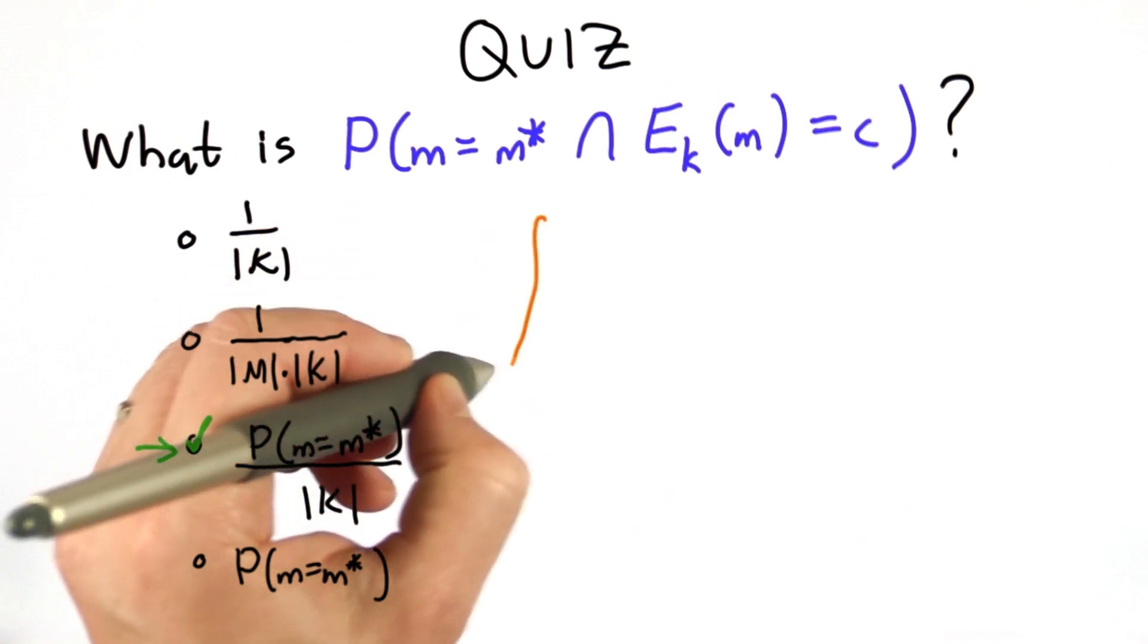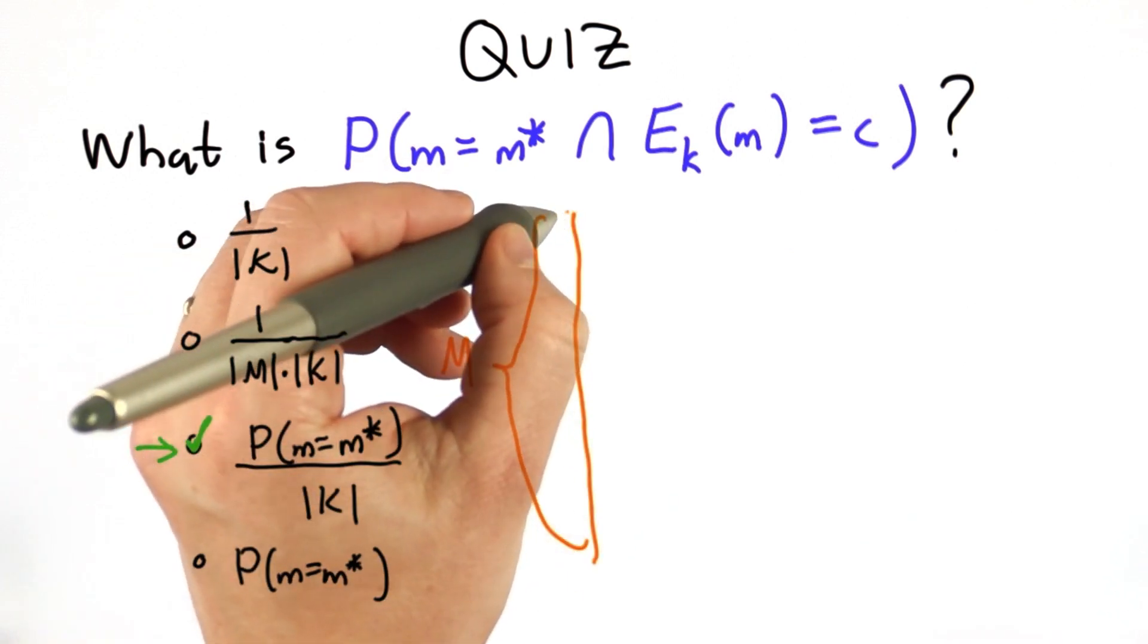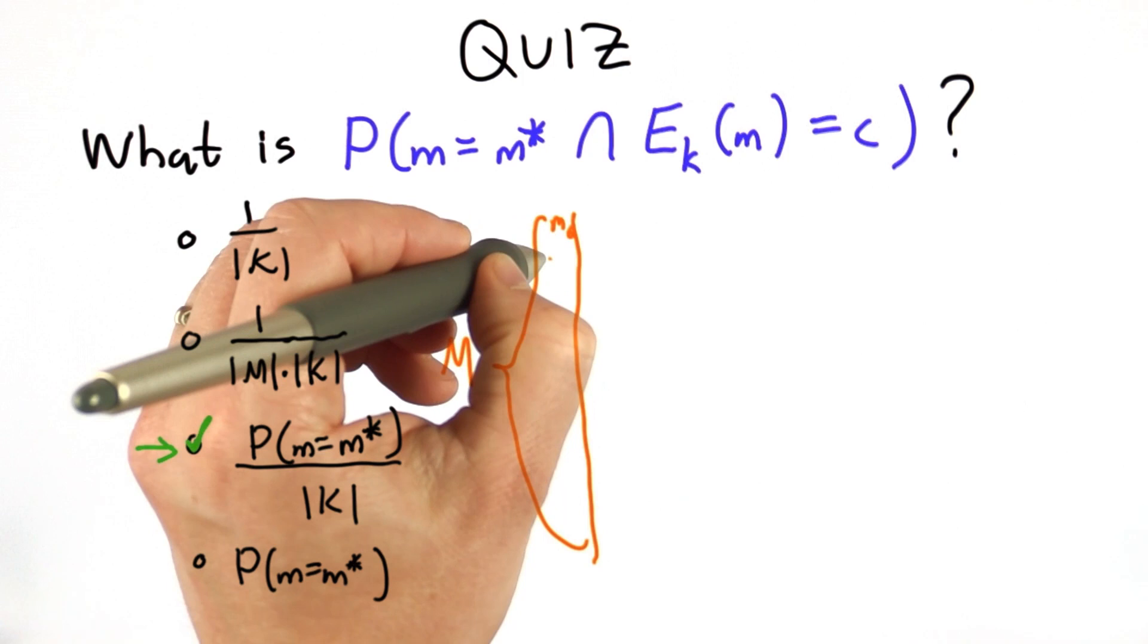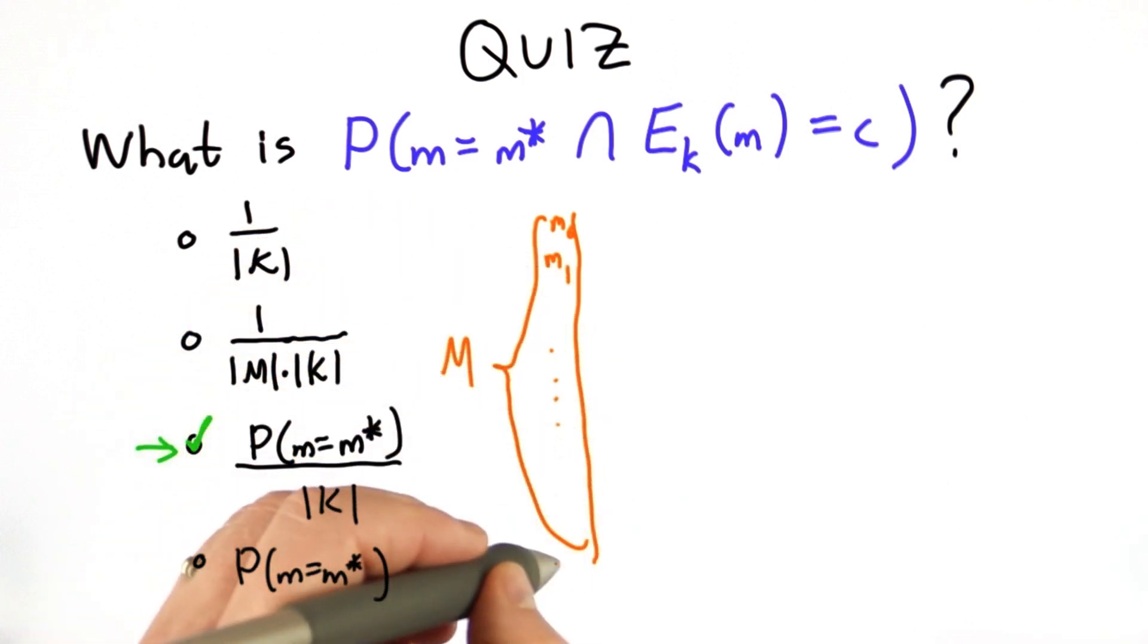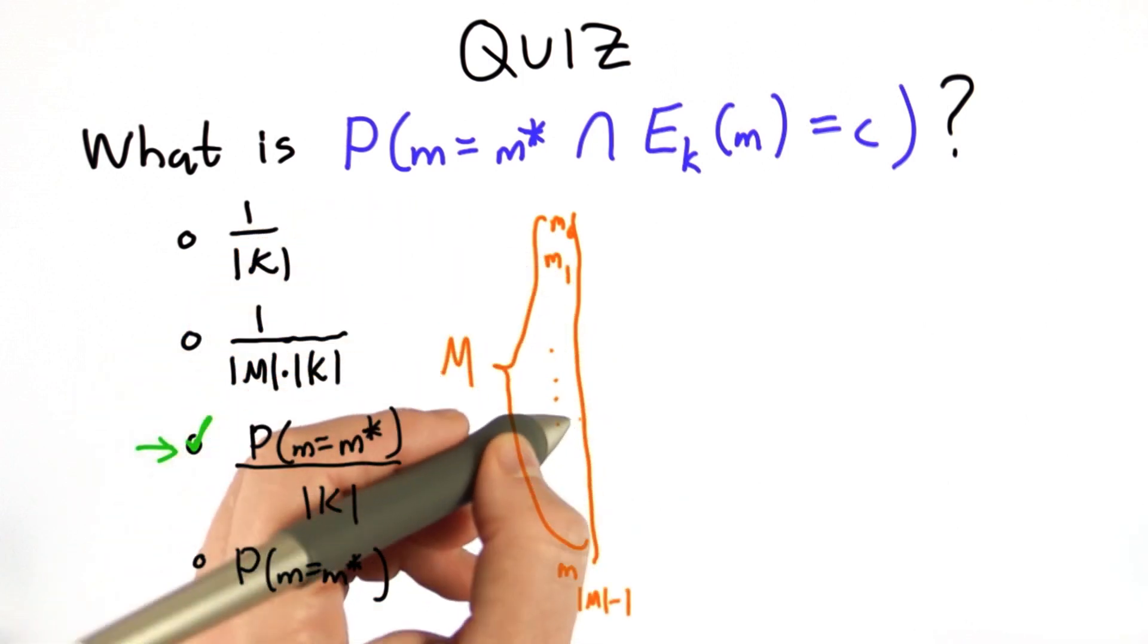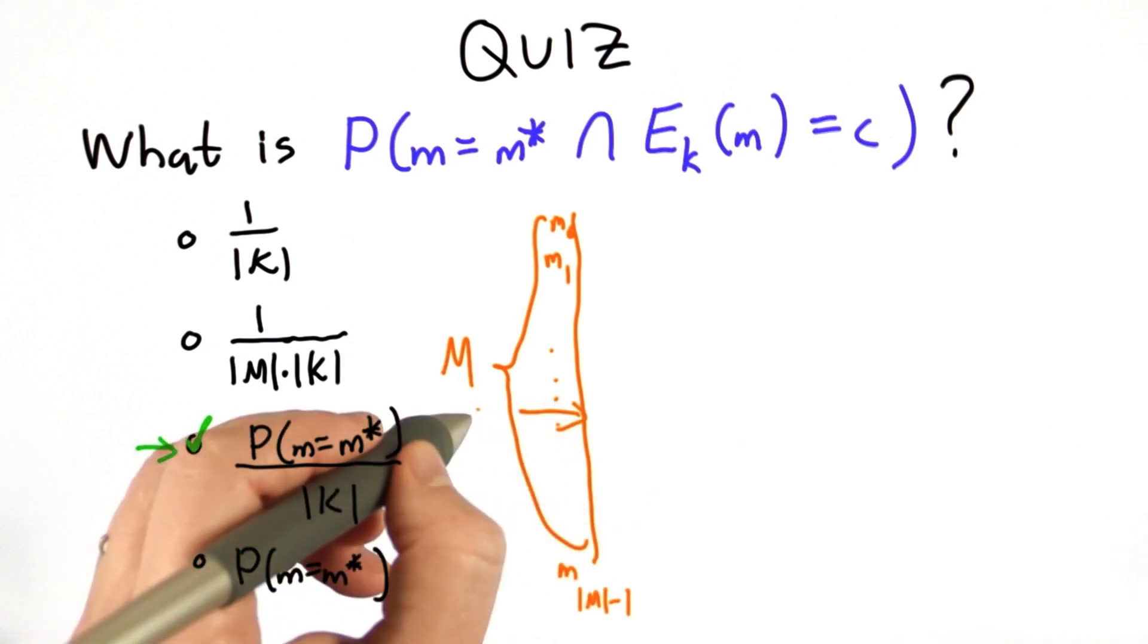So we have all the possible messages being ordered. So we have message 0, message 1, all the possible messages. And there's some message that we've selected that's message M star.